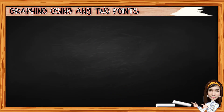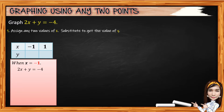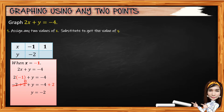Now, for you to understand, let's have the following examples. Graph 2x plus y equals negative 4. For number 1, assign any two values of x, then substitute into the equation to get the value of y. First, when x equals negative 1, we have 2 times negative 1 plus y equals negative 4. 2 times negative 1 equals negative 2. Then apply addition property of equality — add the additive inverse of negative 2, which is positive 2, to both sides. So y equals negative 4 plus 2, which is negative 2.